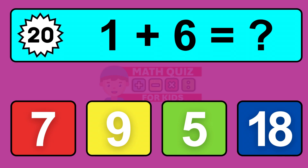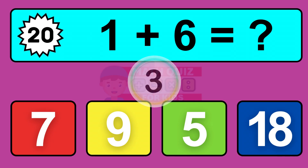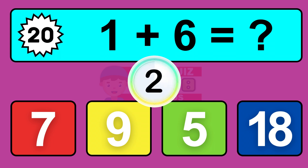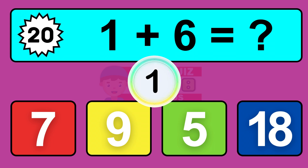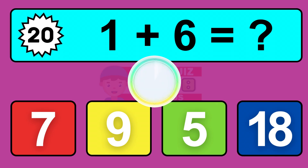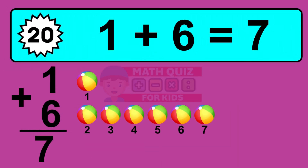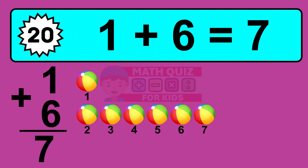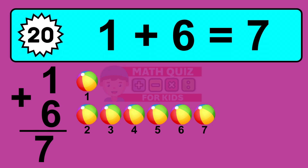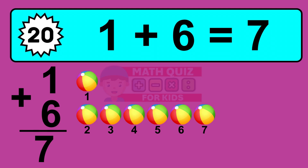Question 20. 1 plus 6 equals what? The answer is 1 plus 6 is 7. Let's count it: 1, 2, 3, 4, 5, 6, 7.